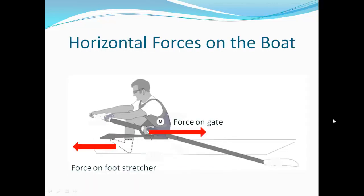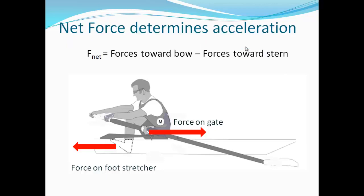There is also a horizontal force on the boat that acts at the gate — this is the reaction to the gate pushing on the oar. This force also has components not parallel to the boat's velocity, but the important component for this discussion almost always points toward the bow of the boat. It is the net force, or vector sum of these two forces, that determines the acceleration of the boat. Net force is calculated by subtracting the forces to the stern from the forces to the bow. The goal of the rower is to generate and coordinate these forces using a minimum amount of energy to move the boat as fast as possible, and understanding the boat acceleration curve will help to achieve this goal.